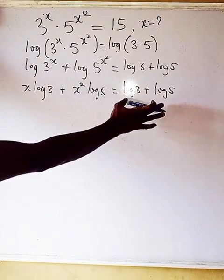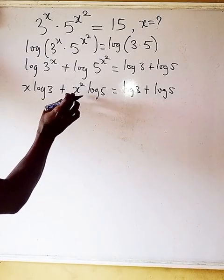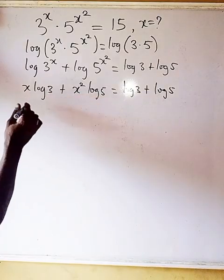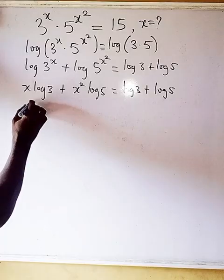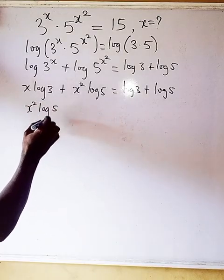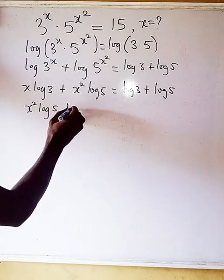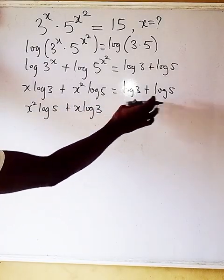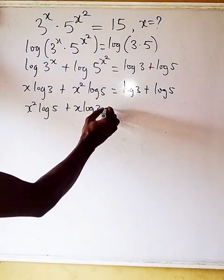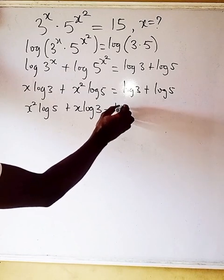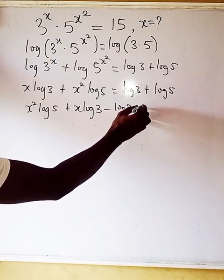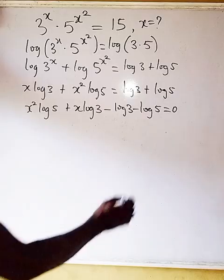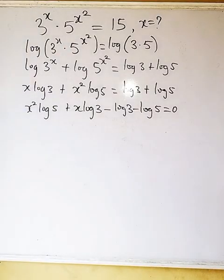Now I want to rewrite this equation by moving all terms to one side. We'll have x²·log 5 plus x·log 3 minus log 3 minus log 5 equals zero.